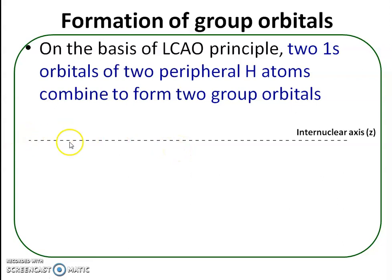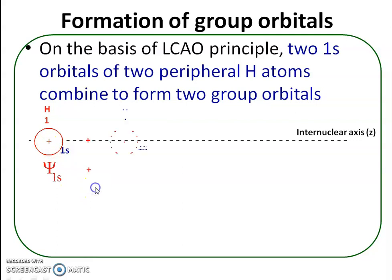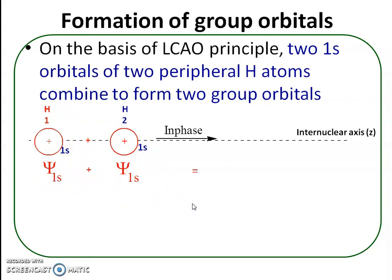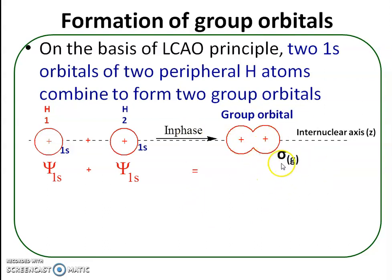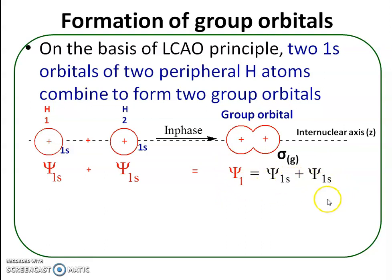Consider the internuclear axis. The first hydrogen contributes a 1s atomic orbital with a positive wave function, and the other hydrogen also contributes a 1s atomic orbital with a positive wave function. This in-phase combination, ψ1s + ψ1s, results in the formation of the first group orbital σg, represented as ψ1 = ψ1s + ψ1s — the same type of group orbital formed in beryllium dihydride.